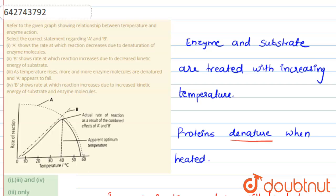Statement 2 says: B shows the rate at which the reaction increases due to decreased kinetic energy of substrate molecules. This is a wrong statement, because when we increase the temperature, the kinetic energy of the molecules will increase, not decrease.